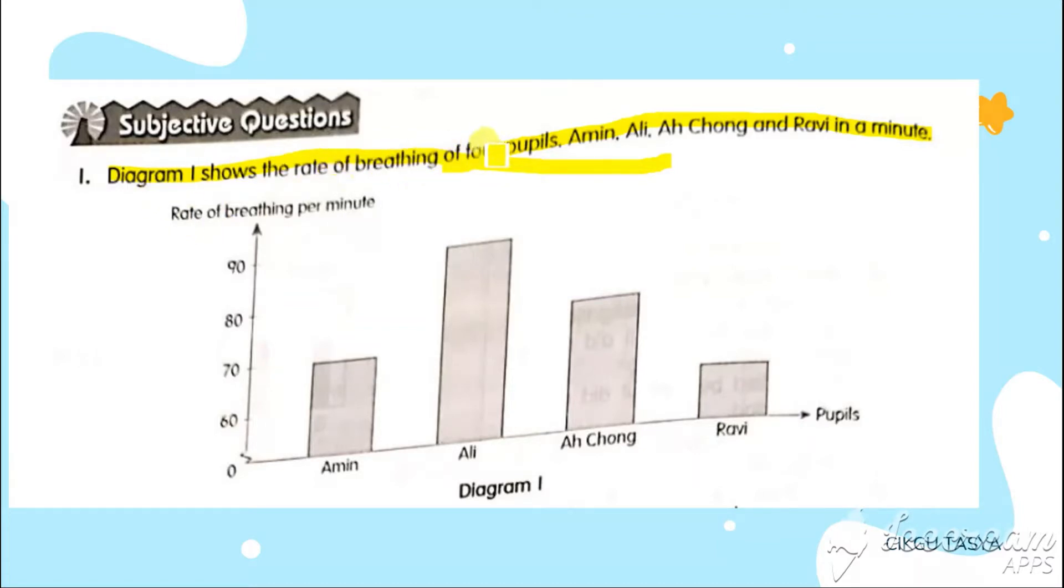Now we can look. Diagram 1 shows the rate of breathing for 4 people, Amin, Ali, Achong and Ravi in a minute. We have the reading per minute. Amin reading is 70, Ali is 90, Achong is 80, and Ravi is 60. You already get your information. From this one, you have to get variables. The pupil are manipulative variable, and rate of breathing per minute is responding variable.